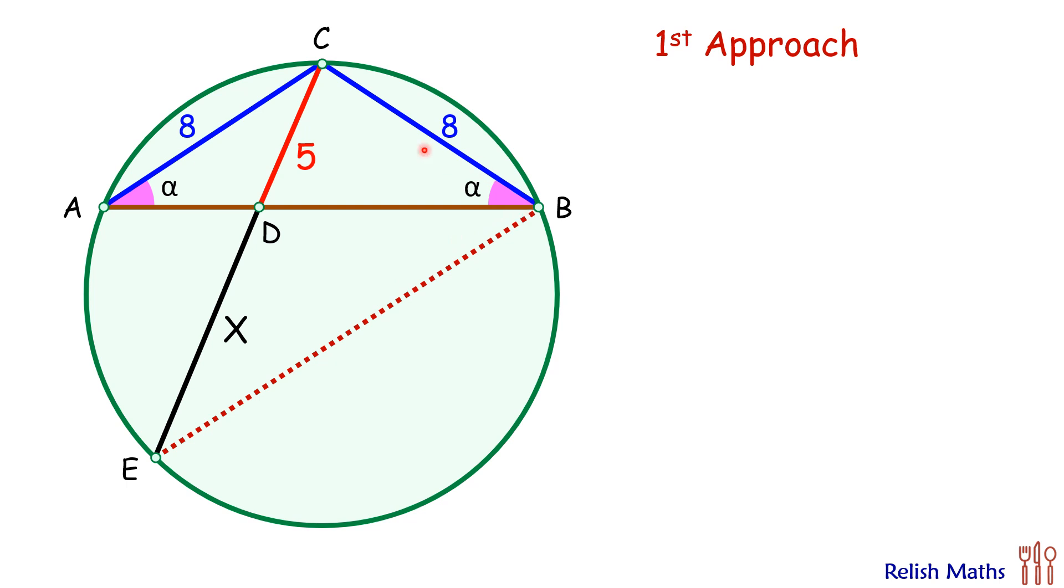Now if you look, chord BC is sustaining an angle of alpha degree on the circumference. So it will sustain alpha on the remaining part of circumference also and thus here this angle E will also be alpha degrees.